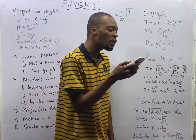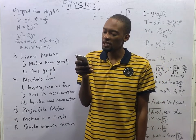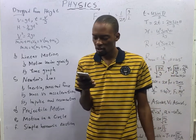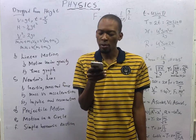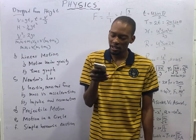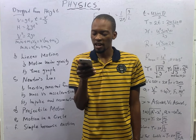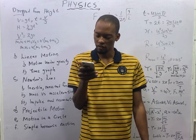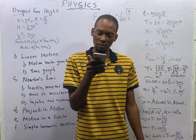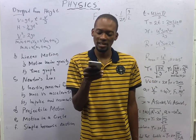The motion of a body is simple harmonic motion if its acceleration is directed towards a fixed point and is proportional to its distance from that point. For an object moving in a circular path of radius 0.5 m with a speed of 1 m/s, the angular velocity W equals V/R = 1 / 0.5 = 2 radians per second.